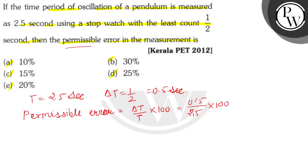This comes down to 20 percent. So here we check: option A is wrong, option B is wrong, option D is wrong — then option E is correct.